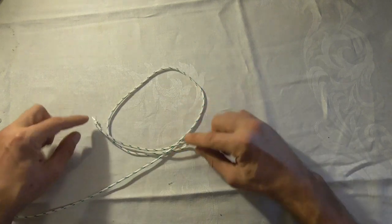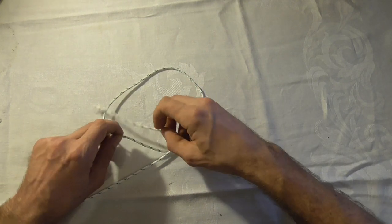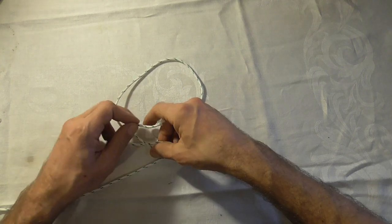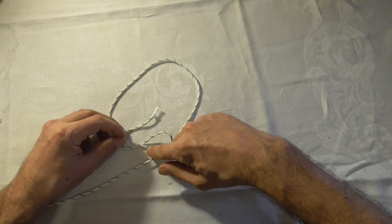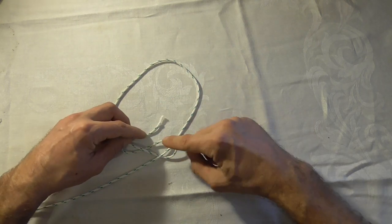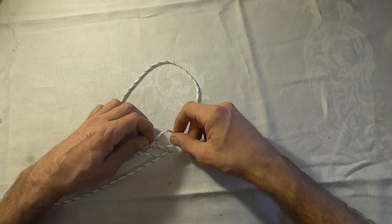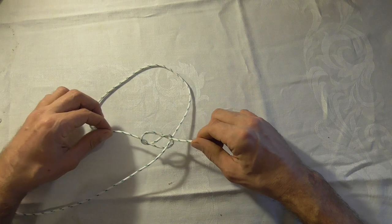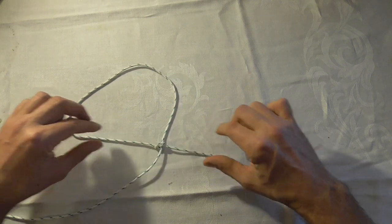Now we're going to take the end and tie a loose figure eight. So here I'm going under, over, and I'm going to go under this section and back up through. There you have that figure eight shape. We're just going to tighten that down.